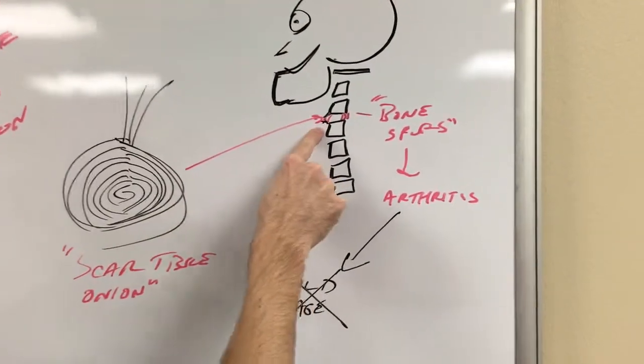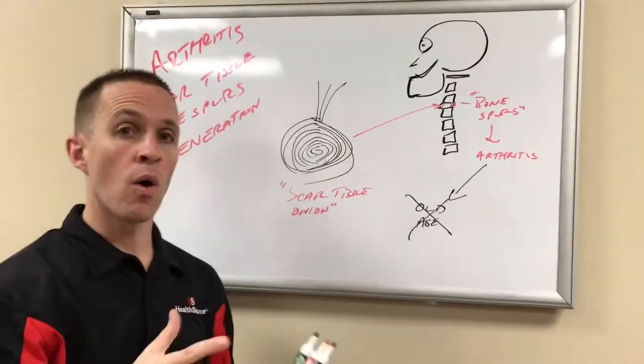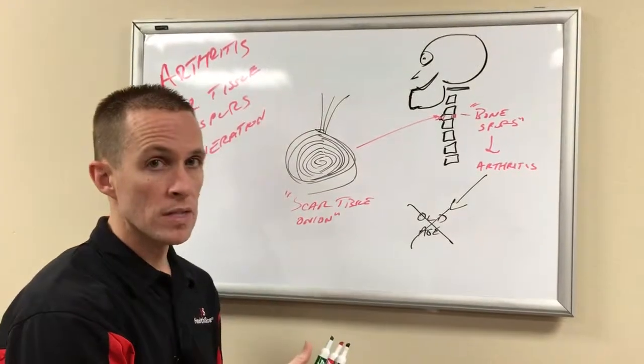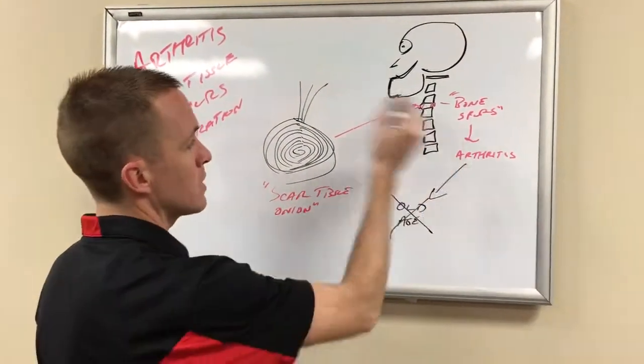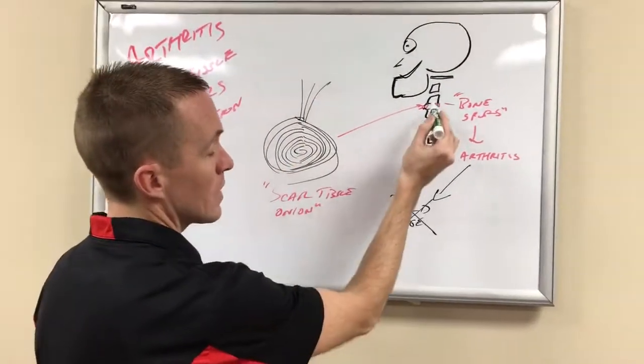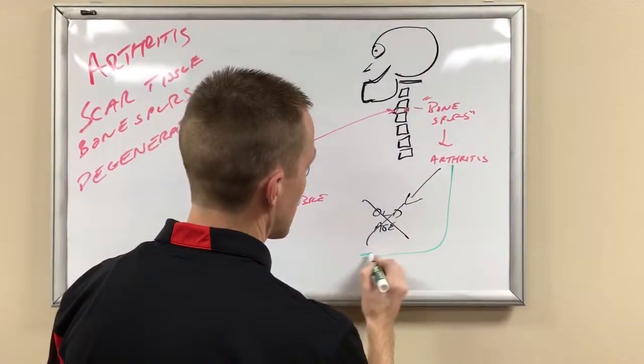Everybody thinks old age is what caused arthritis, but it's not. I've seen older people with no arthritis and younger people with arthritis. So we know what causes it: it's from a joint that's not moving. That causes the scar tissue onion to happen. What fixes it? The key to fix it is all about mobility. We need movement.